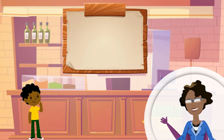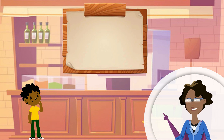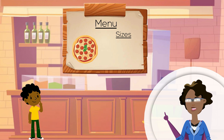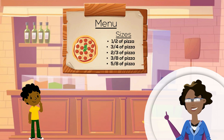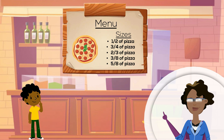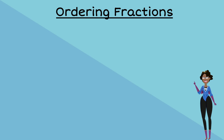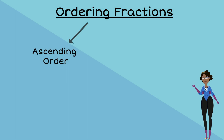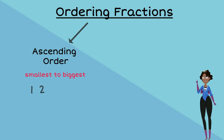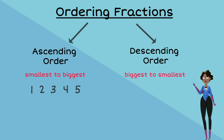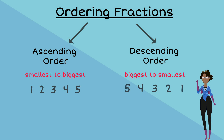John had this problem when he was trying to order his pizza. The menu was selling the pizzas as fractions: one half, three quarters, two thirds, three eighths, and five eighths. He needed to figure out which one was the biggest. We can order fractions in two different ways. The first way is ascending order, which means from smallest to biggest — for example, one, two, three, four, five. The other way is descending order, which means from biggest to smallest — for example, five, four, three, two, one.